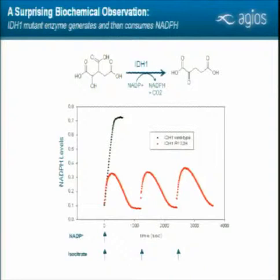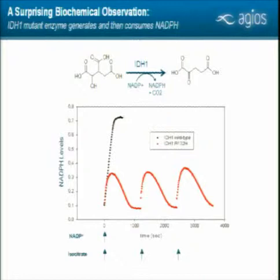At Agios, we were interested in this mutation, first because it's a metabolic enzyme—the company was founded to study metabolism as a novel mechanism to treat tumors. But we were puzzled by the fact that IDH mutations always show loss of heterozygosity and you never see complete loss. To me and to the company, that really suggested this had a novel gain of function as opposed to a loss of function.